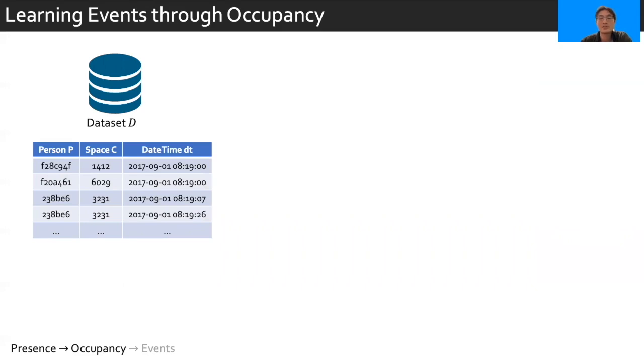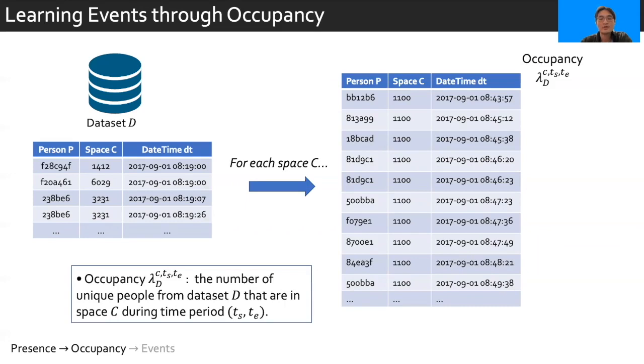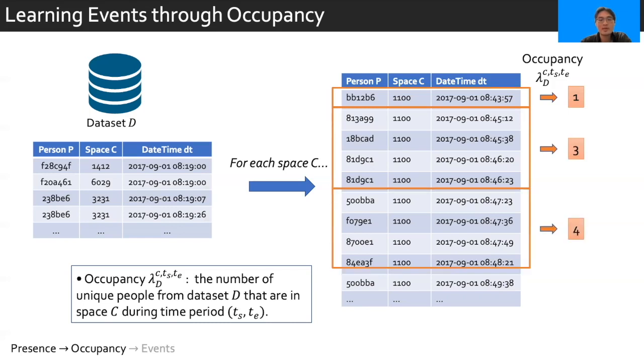Let's first look at how we define the occupancy of a space and how it's computed. Given this seed dataset, we start by selecting the associated datetimes and people for specific space C, in this case, space 1100. Then we define the occupancy lambda as the number of unique people from dataset D that are in space C during the time period TS TE. For example, if our time period spans two minutes, then we find one person is in 1100 between 8:43 and 8:45, 3 people between 8:45 and 8:47, and 4 people between 8:47 and 8:49. A time series of occupancy can be then created by varying the time period TS TE over all the different datetimes found. In this case, we have a time series of 1, 3, 4...